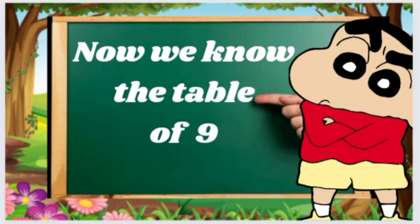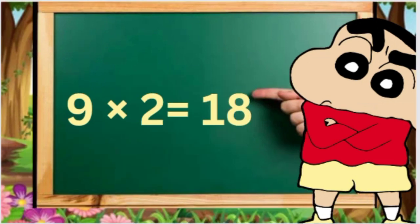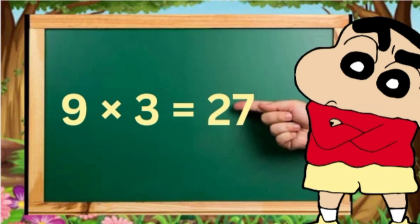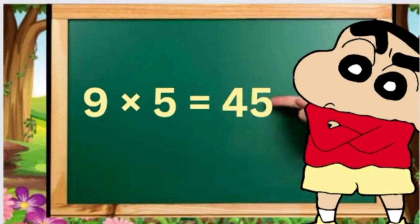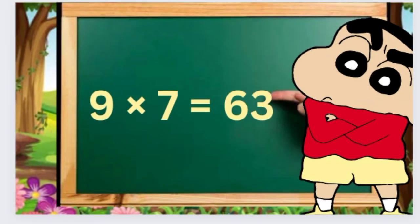Nine ones are nine, nine twos are eighteen, nine threes are twenty-seven, nine fours are thirty-six, nine fives are forty-five, nine sixes are fifty-four.